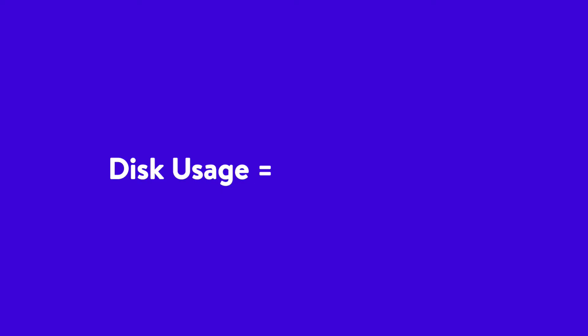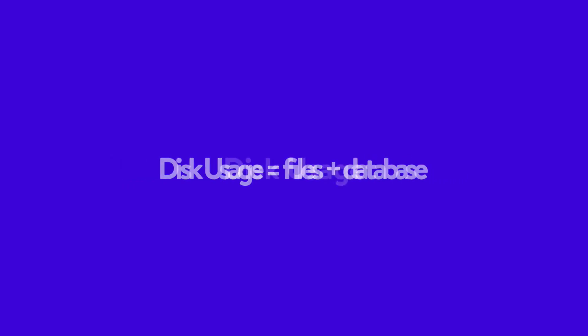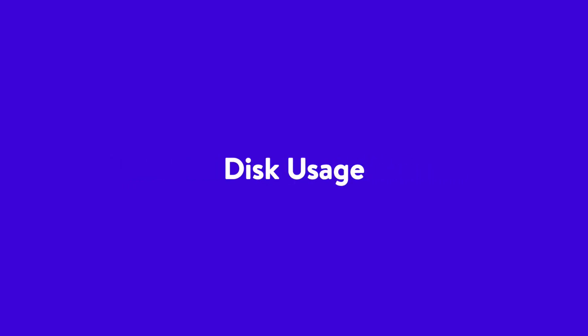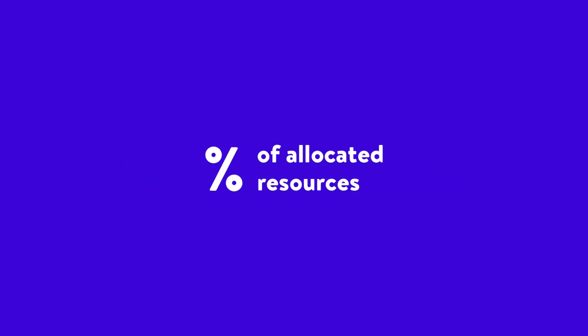In WordPress, disk usage is typically composed of two things: your files and your database. Combined, these make up your total disk usage on your server and the percentage of your allocated resources. At Kinsta, to give you as much space as possible, staging sites are excluded from our reporting when calculating your total disk space usage. Only live sites count towards your total.